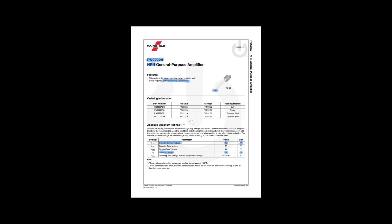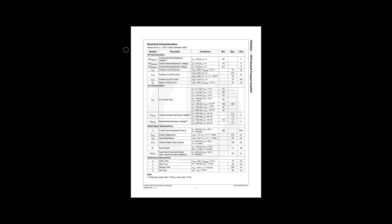If a motor runs at half an amp normally but current spikes near one amp when starting and stopping, that's okay - that's why you have ratings like this. Spiking up to one amp is all right, but you never want to run it continuously at one amp. Running above one amp can irreparably damage the transistor. This is the vast majority of the information we actually care about, but there's a little more on page three.